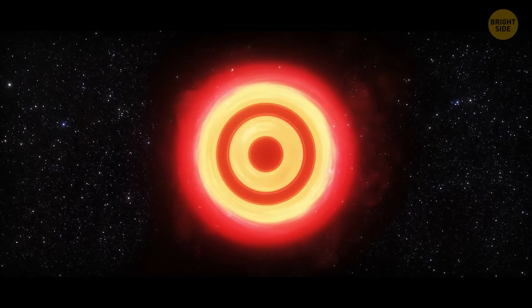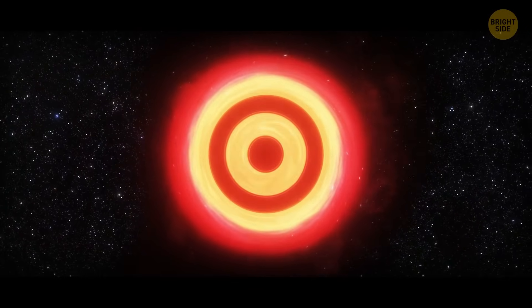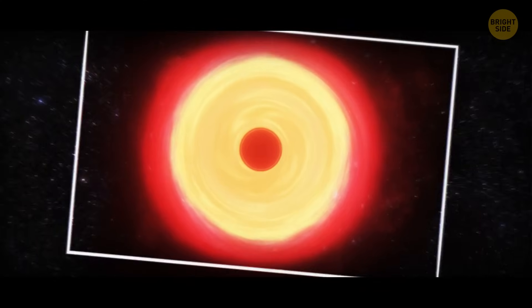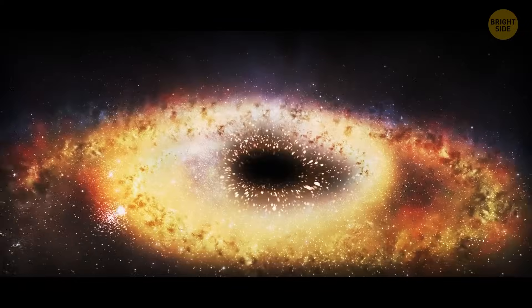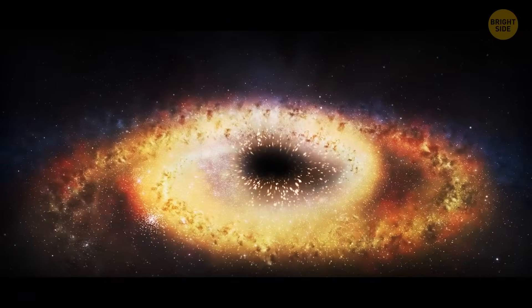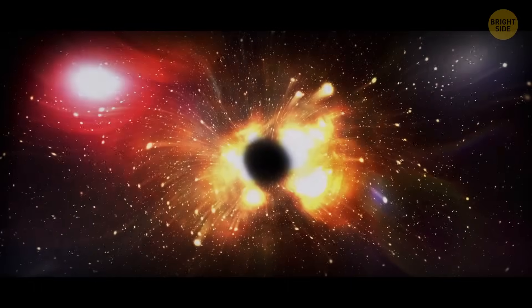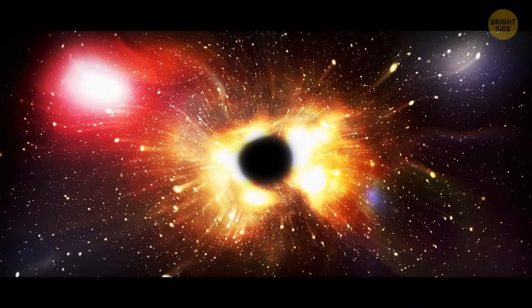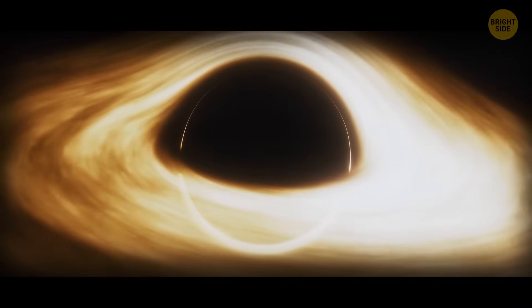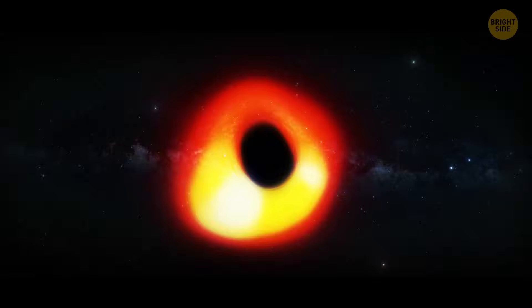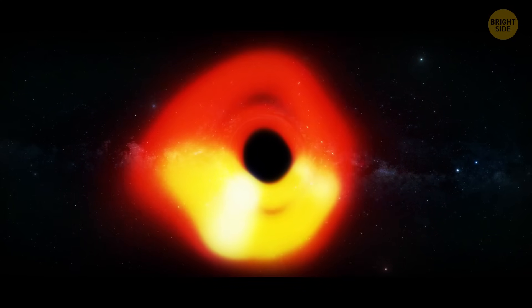Anyway, you may remember this photo as the first-ever image of a black hole ever. It went crazy viral across the Internet. And this black hole, M87-star, located in the Messier 87 galaxy, is way scarier than Sagittarius A-star. You thought 4 million solar masses is impressive? Then how about 2.5 billion solar masses?